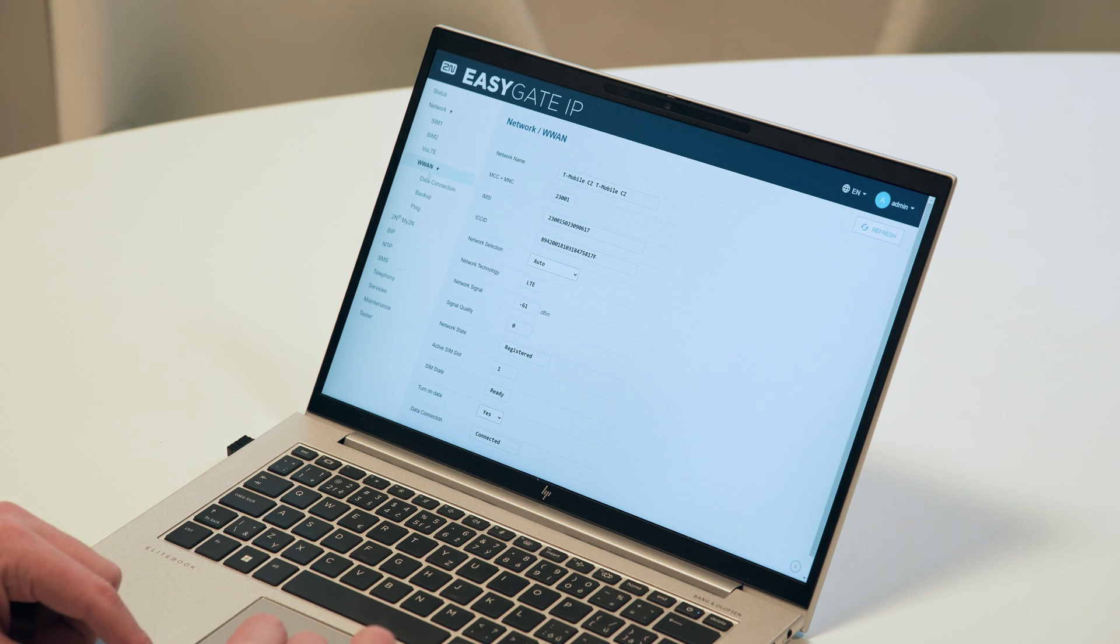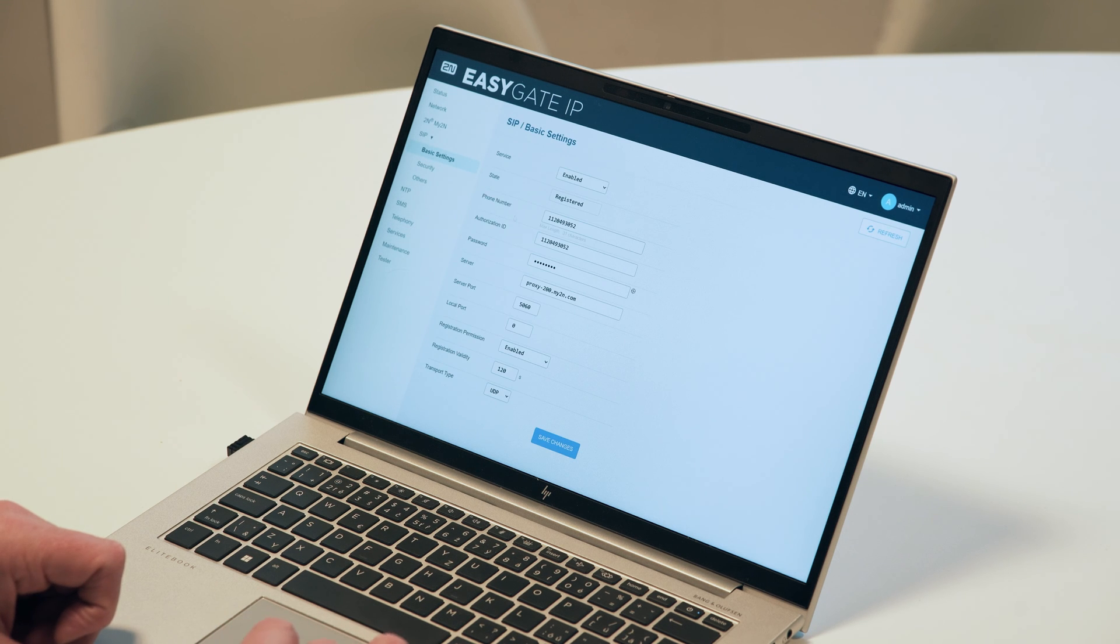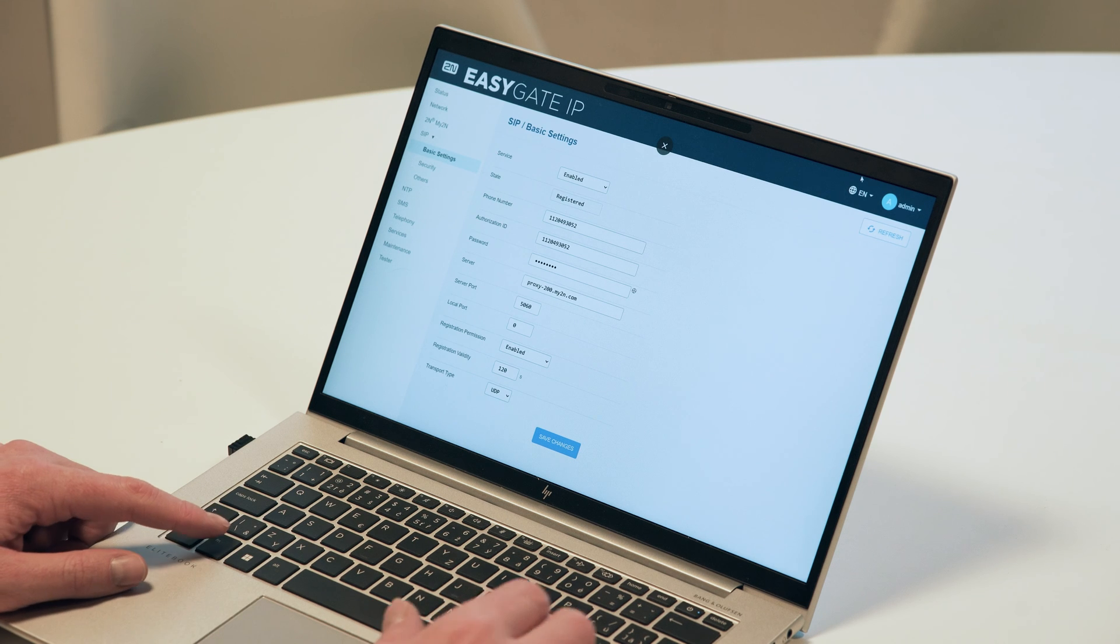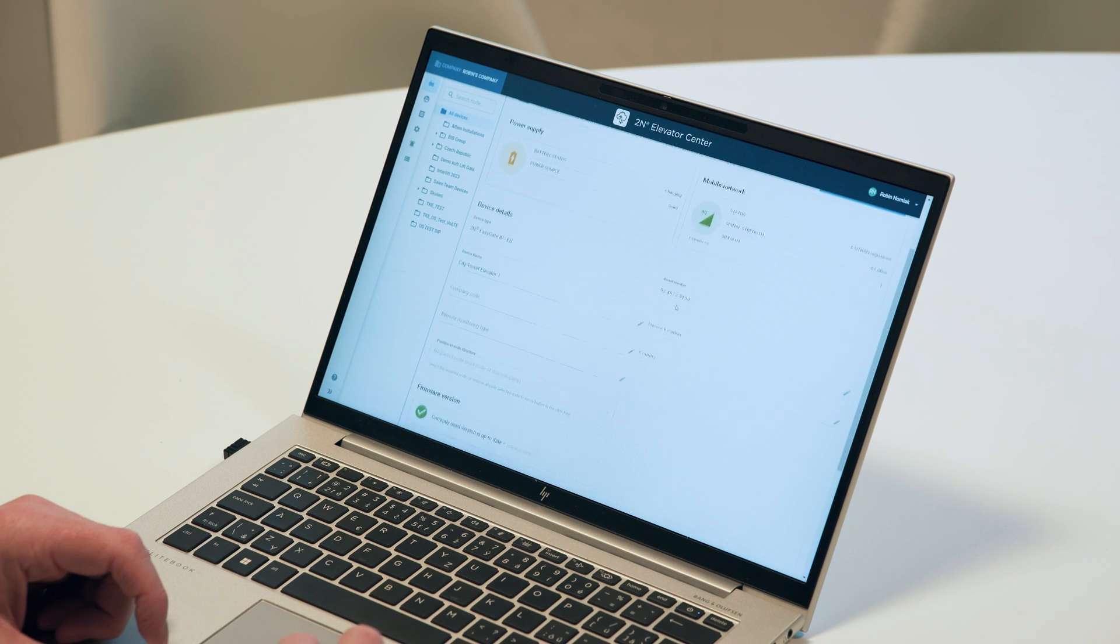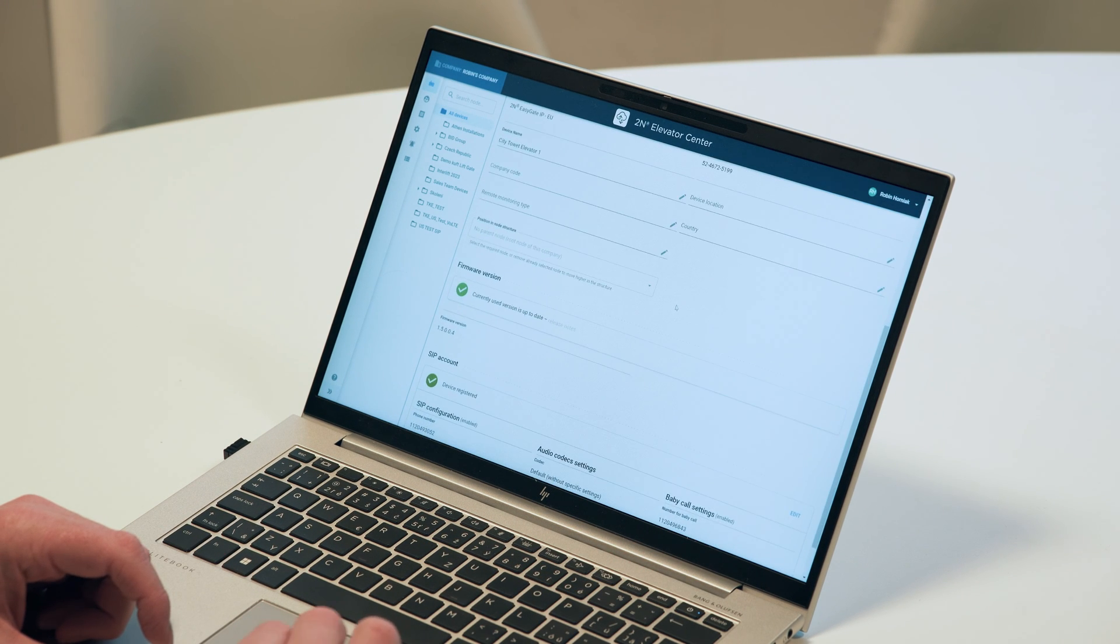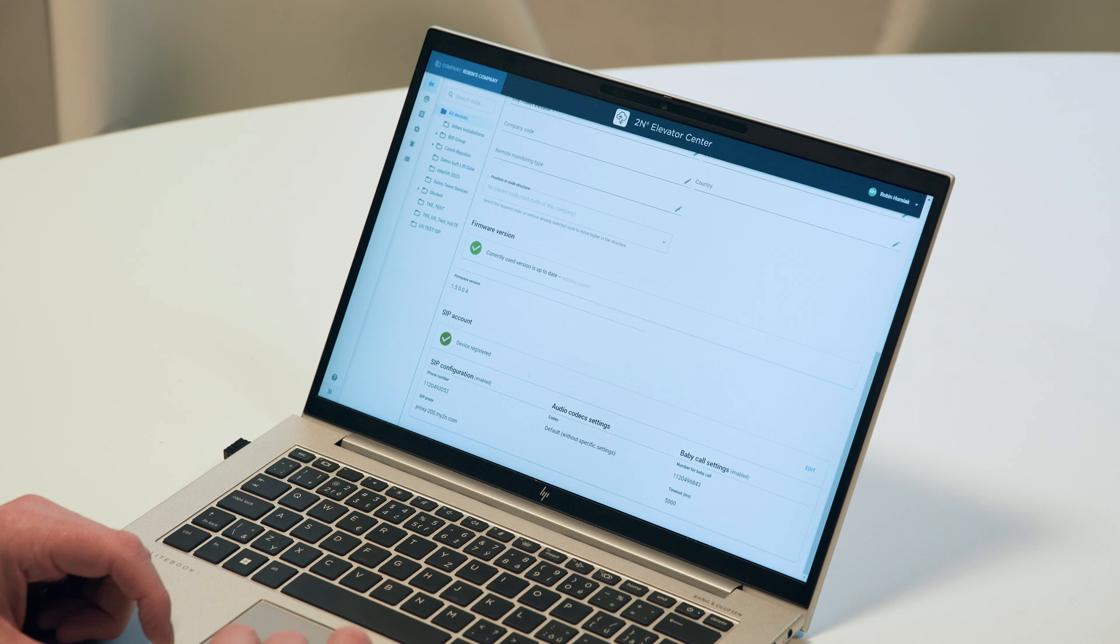if you want to use global roaming SIM cards and VOLTE calls, it may require some additional configuration changes, which can be made by connecting the device to a PC via USB cable using the 2N EasyGate web configuration utility or in our cloud management platform, the 2N Elevator Center, which you can also use for remote monitoring.